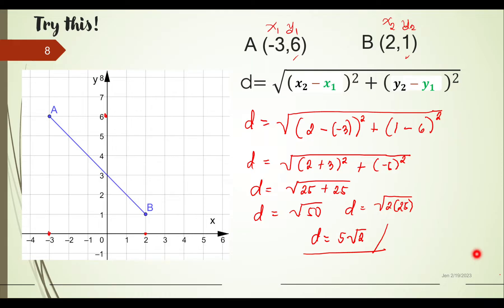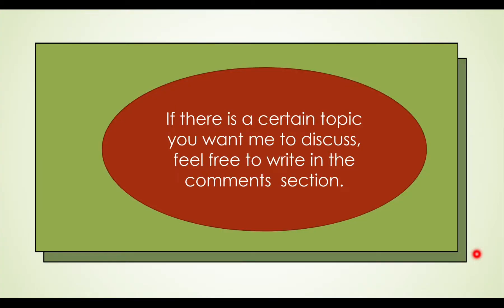Again, ladies and gentlemen: the distance formula is found by taking the square root of the sum of the squares of the differences of the x-coordinates and the y-coordinates. Our basis was the Pythagorean theorem, built on the right triangle. Thank you for listening. If there is a topic you want me to discuss, feel free to write in the comment section below.